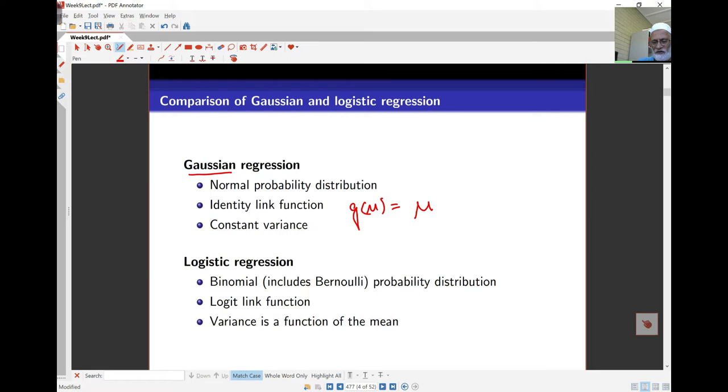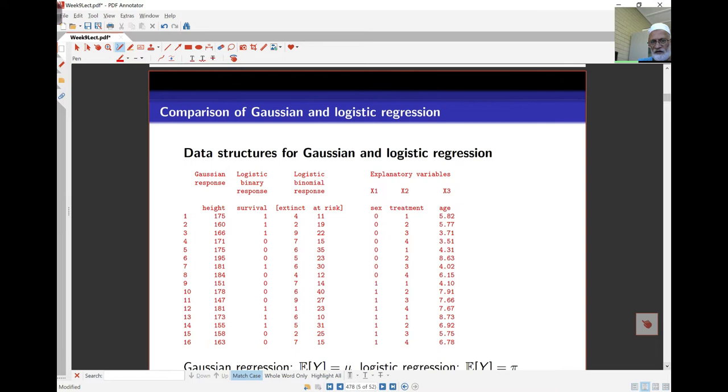In the logistic regression, the distribution is binomial or Bernoulli. The logit is the link function and the variance is a function of the mean. And here is the data situation. We're going to have here our response. So this is the Gaussian response. And this is the binary response or the Bernoulli response as well.